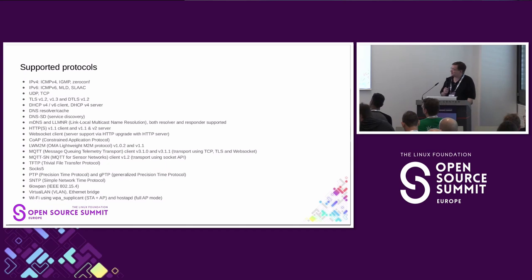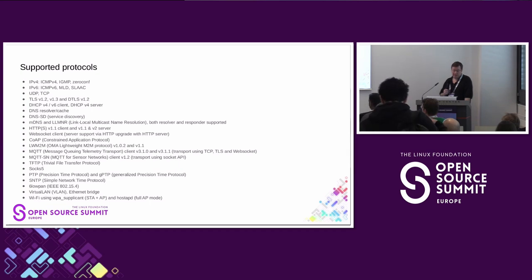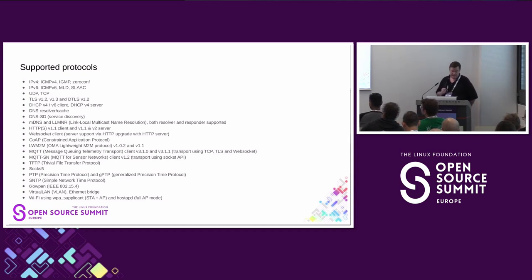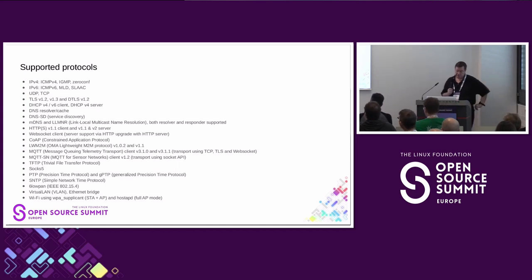There are a ton of protocols supported. IPv4 and IPv6 are supported, together with ICMP, multicast, and auto-configuration. UDP and TCP are supported. For secure TCP connections, you can use TLS 1.2, and just last week TLS 1.3 support was merged upstream. For secure UDP connections, you can use DTLS 1.2. For address management, there are clients for DHCP v4 and v6. Unfortunately, there's only v4 server support, but patches are welcome for v6. You can also set IP addresses statically.